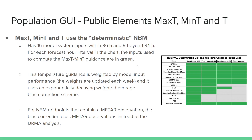The deterministic NBM for max t, min t, and t has 16 model inputs within 36 hours, and that goes to only 9 beyond 84 hours — you can see those on the right. The temperature guidance is weighted by model input performance. These weights are updated each week using an exponentially decaying weighted average bias correction scheme. For NBM grid points that contain a METAR observation, the bias correction uses METAR observations instead of their analysis.